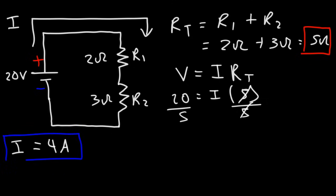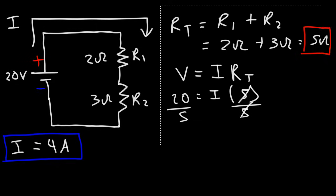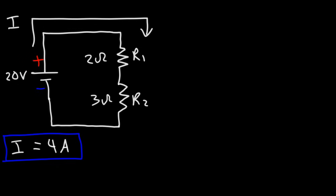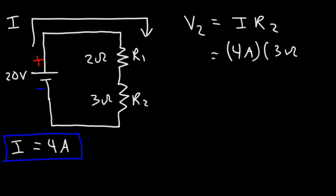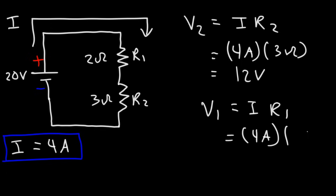Now that we have the current, we can calculate the voltage drop across each resistor using Ohm's law, V equals IR. The voltage across R2 is the current times R2: 4 amps times 3 ohms gives a voltage drop of 12 volts. V1 is I times R1: 4 amps times 2 ohms, which is 8 volts.